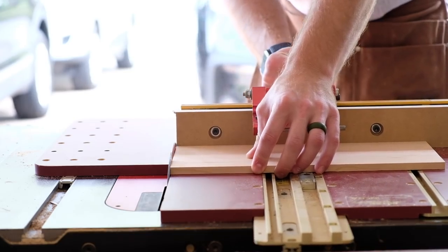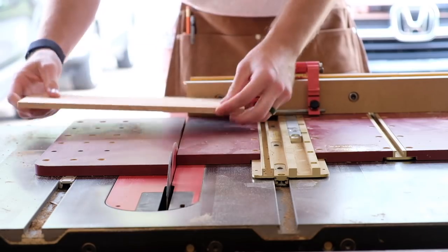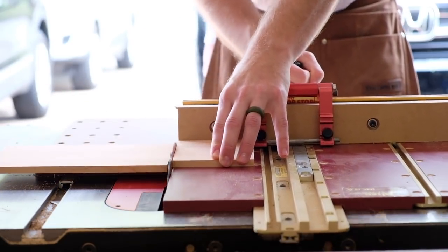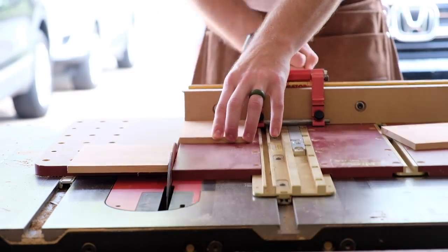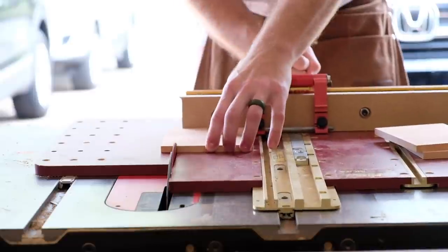Next I can cut the short dividers to length at the crosscut sled which again is done after making multiple test cuts sneaking up on the right fit. This is a situation where you rely on measuring directly off your work piece and not what your plans or drawings say.